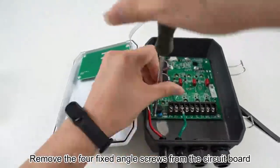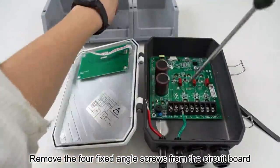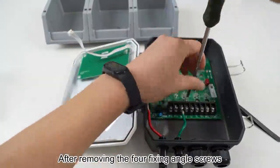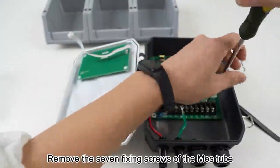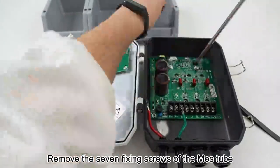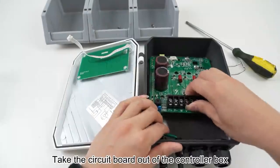Remove the four fixing angle screws from the circuit board. After removing these four screws, remove the seven fixing screws of the MOS tube. Take the circuit board out of the controller box.